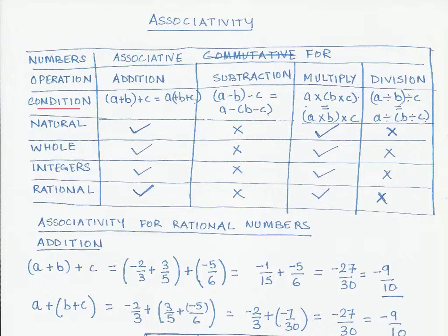Similarly, we explore this for subtraction, multiplication, and division. This is very intuitive from our earlier discussion on commutativity, in which we were changing the order of numbers.